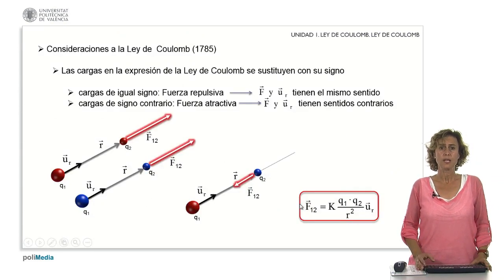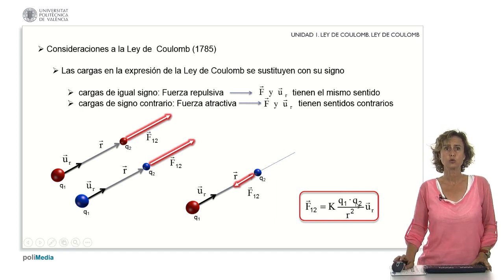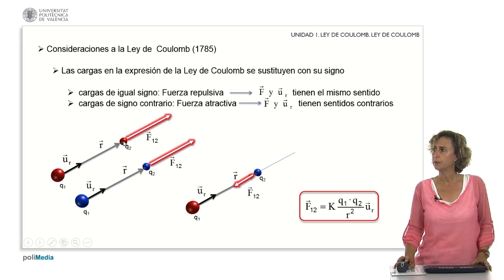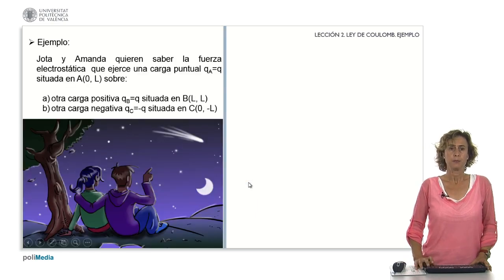What further considerations do we have to make? In Coulomb's Law, we have to replace the charges Q sub 1 and Q sub 2 with their sign. In this way, charges of the same sign, either both positive or both negative, will exert a repulsive force, since F and U sub r in both cases have the same direction. If we have a positive charge and a negative charge, the force is attractive, since U sub r and F have opposite senses.